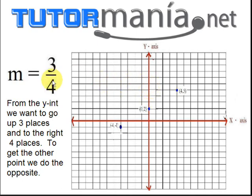When the denominator is positive, we go to the right 4. In this case, our denominator, or the number on the bottom of the fraction, is 4. So we're going to go to the right 4. 1, 2, 3, 4. And we get the point 4, 5.